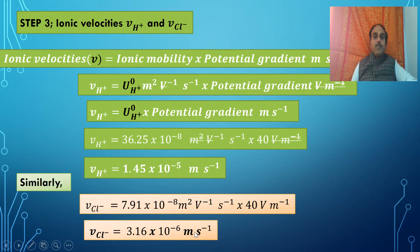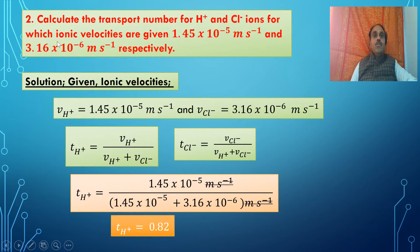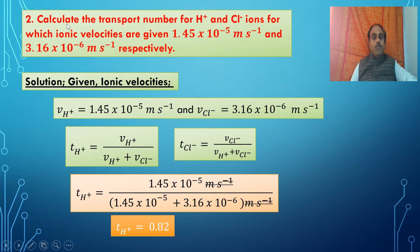In this problem, ionic mobility was calculated in Step 1 and potential gradient in Step 2. Using Steps 1 and 2, we calculated the ionic velocities of H⁺ and Cl⁻ ions. Using these ionic velocities or ionic mobilities, we can now calculate the transport number.